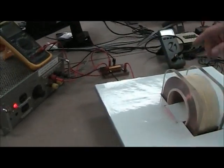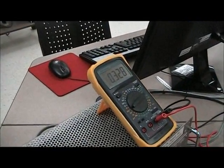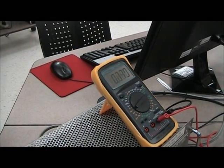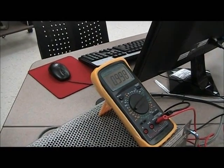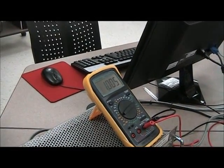So we set the voltage at about one volt and that gives us one and a half amps of current.